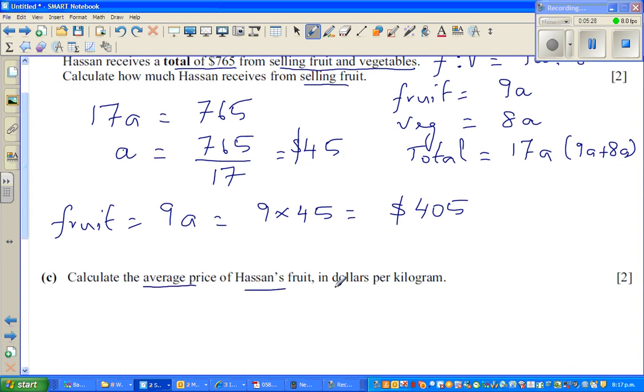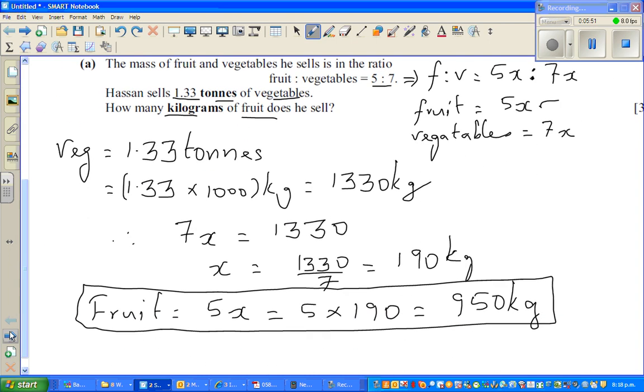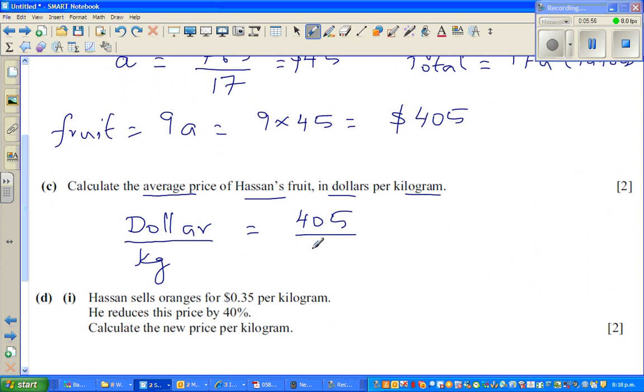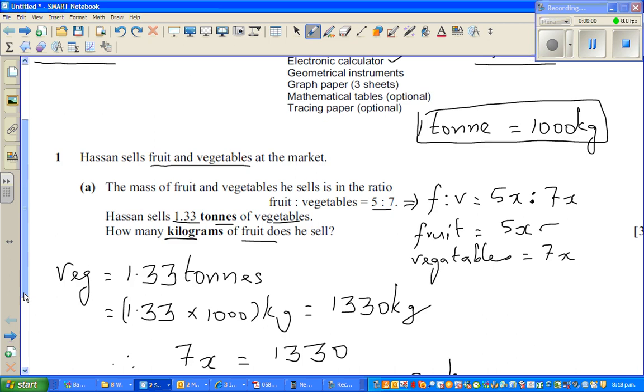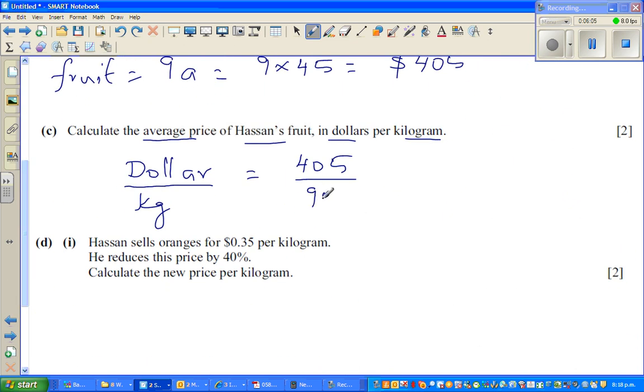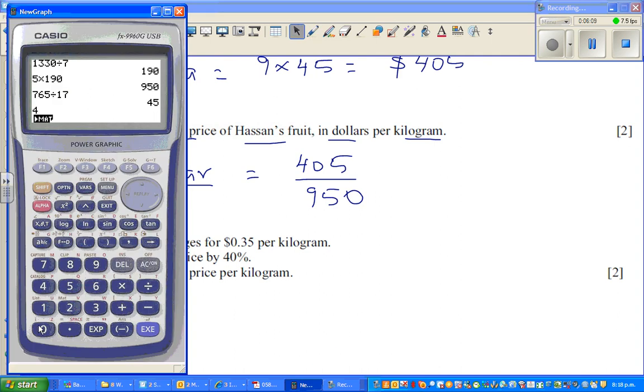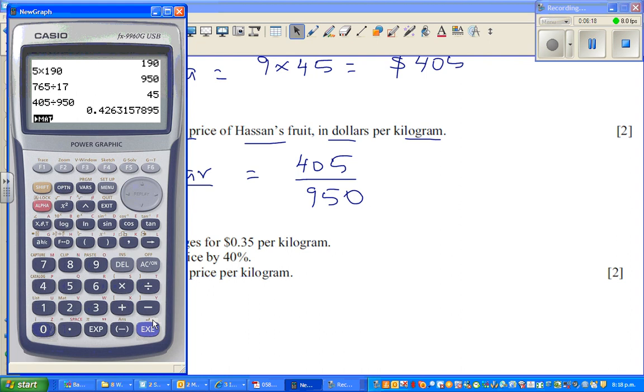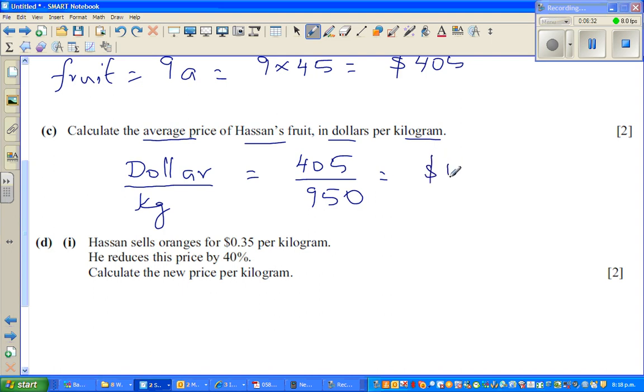Calculate the average price of Hassan's fruit in dollars per kg. When you have dollar per kg, it's the dollars for fruit, which is 405, divided by the kg for fruit, which is 950. Per means divided by. So 405 divided by 950. Let me round it to two decimal places. This is 0.43. So per kg, he is selling for $0.43.